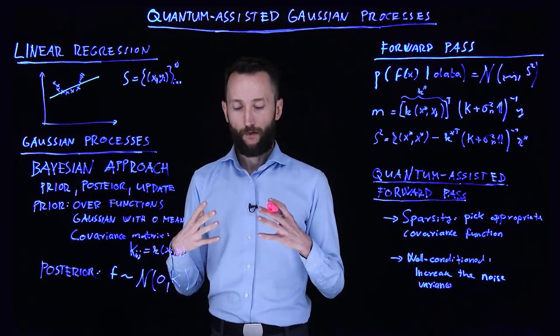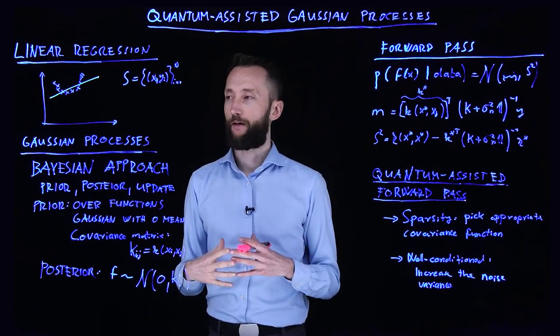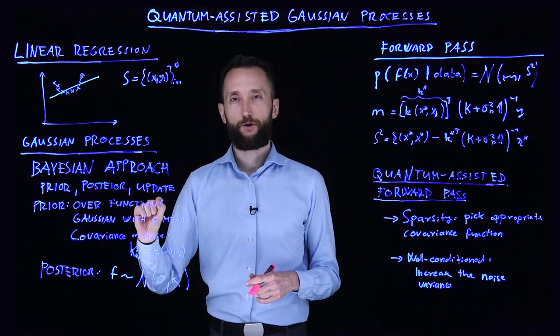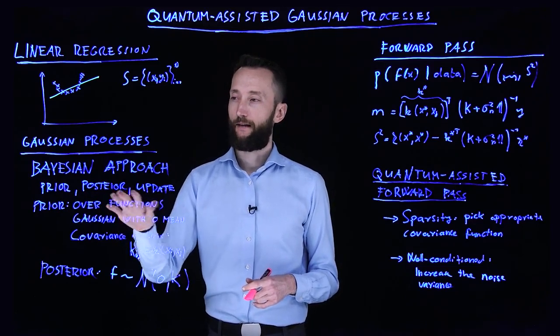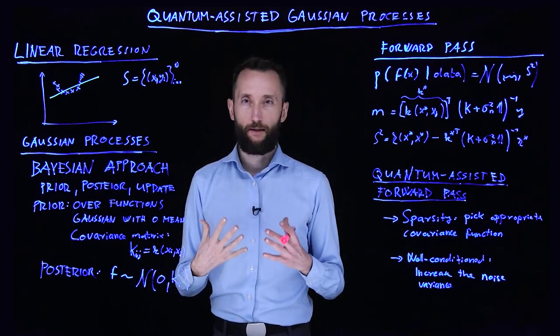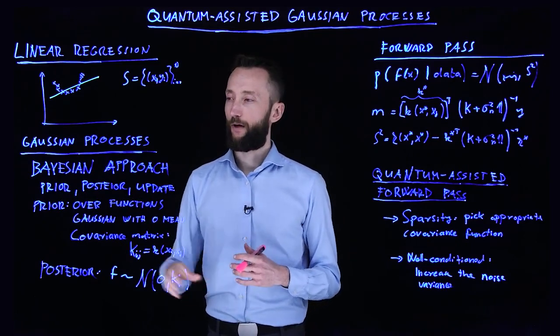And for any Bayesian approach, you have mainly three components: a prior distribution, a posterior, and something to connect the two—an update rule or some likelihood function. So in our case, the prior is over functions.